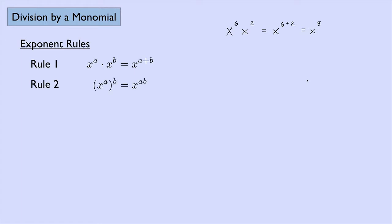The next rule says that x to the a power raised to the b power is x to the a times b power. So if we had x to the third power raised to the second power, that would be x to the three times two power, which is x to the sixth power. Three times two is six.